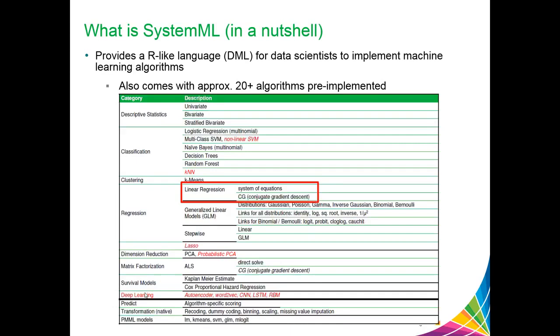SystemML also supports commonly used data transformation tasks such as recoding, dummy coding, binning, scaling, and missing value imputation.